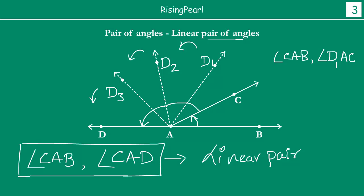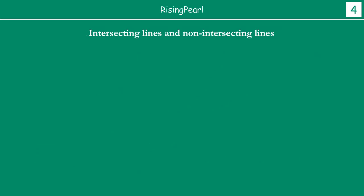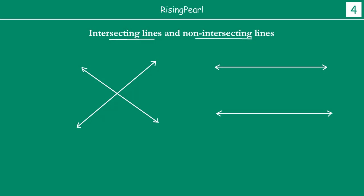So now we will keep moving forward. Intersecting lines, non-intersecting lines. What do we mean by intersecting lines and what do we mean by non-intersecting lines? So what we have done, we have drawn a line L and a line M. This is figure 1 and let us call this figure 2.